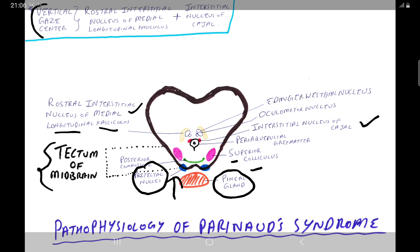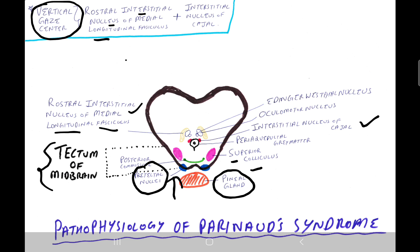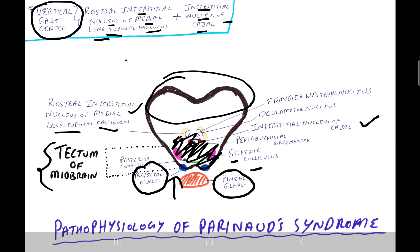The vertical gaze center is the rostral interstitial nucleus of the medial longitudinal fasciculus (riMLF) plus the interstitial nucleus of Cajal. This structure is located in the dorsal part of the midbrain.